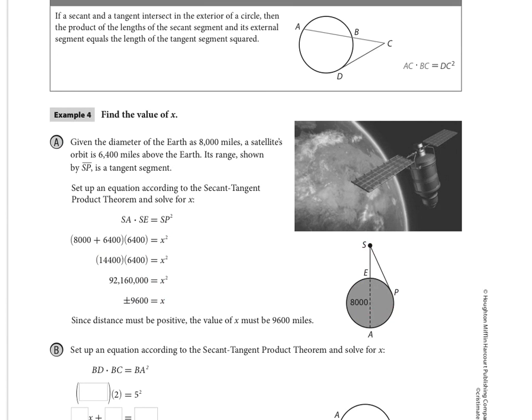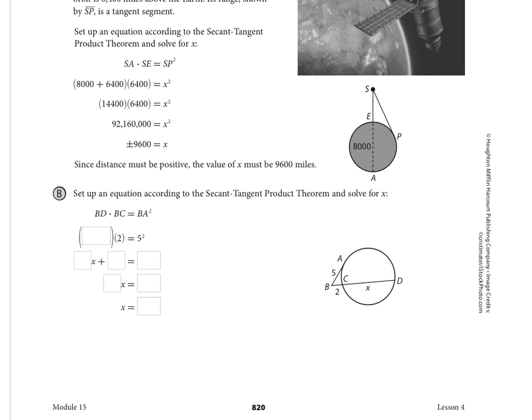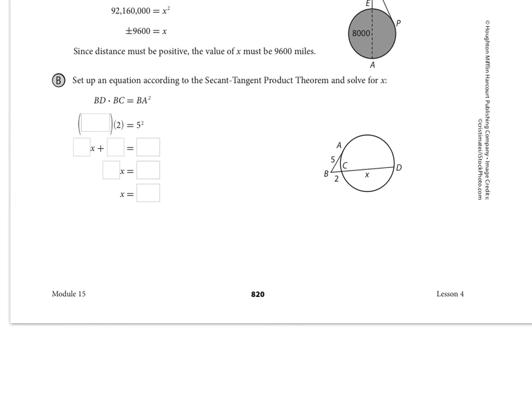Okay then we have another example here for part B still using the secant tangent product theorem. And the equation that we're working with remember is the whole length times the outside piece equals the tangent squared. So the whole length in this particular problem is remember from B all the way to D we're going to add the two pieces that are algebraically labeled here together. So we're going to have x plus 2 inside the parentheses for BD times 2 is going to equal the tangent length which is 5 all squared. Then it's algebra so all we have to do is distribute 2x plus 4 equals 25 is what 5 squared gives us. 2x is going to equal 21 and then if I divide we get 10.5 for our x.